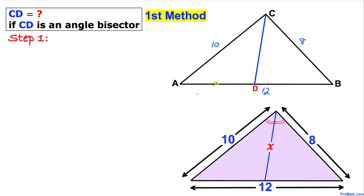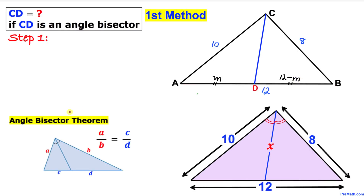We are interested in the length of AD and the length of DB. Let me call AD as M, then DB is going to be 12 minus M, since the total length of AB is 12. Here is our angle bisector theorem: we have the proportion A over B equal to C over D for a triangle with those side lengths.